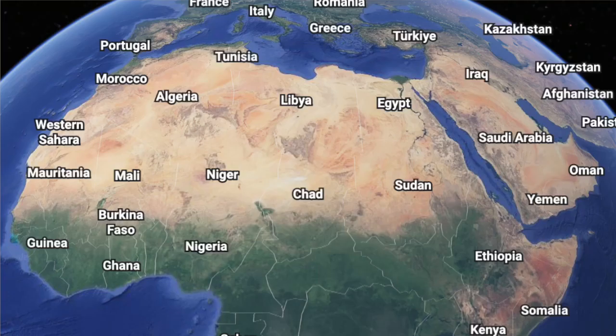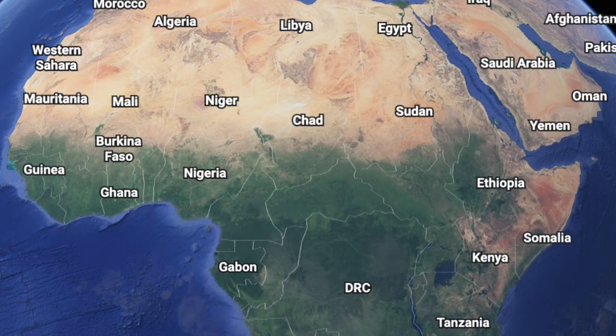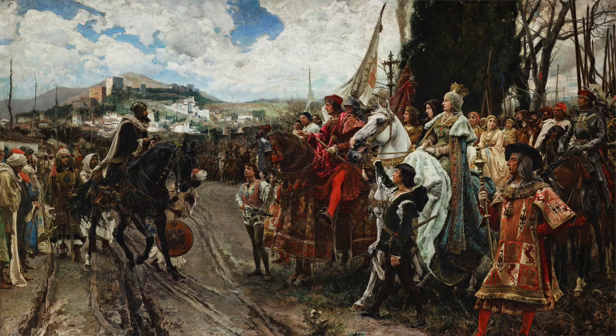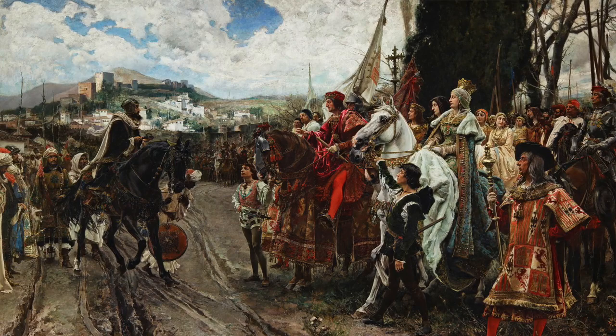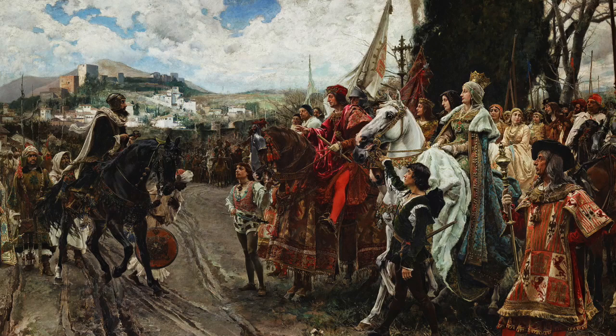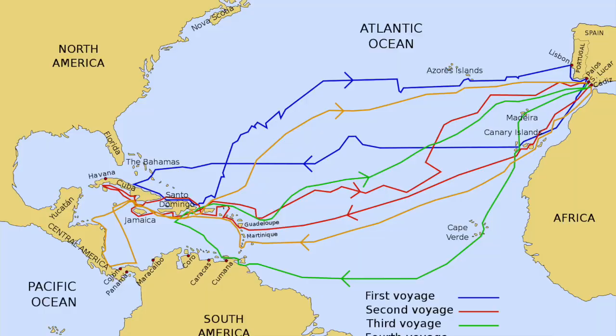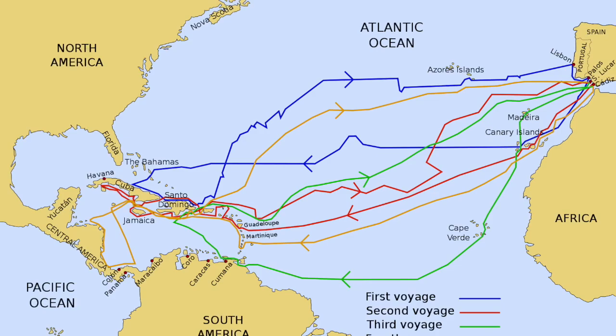Meanwhile, more good news happens as in 1488, Bartholomeus Dias reaches the Cape of Good Hope, the southernmost point in Africa. Finally, in 1492, the Granada War ends, with the Muslims at last being expelled from Western Europe. This marks the beginning of a great change in European history, because that very same year, as you all know, Christopher Columbus begins his first voyage, which results in the exploration of the Caribbean.